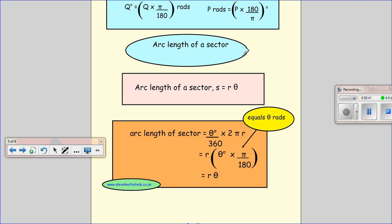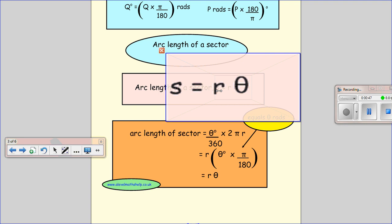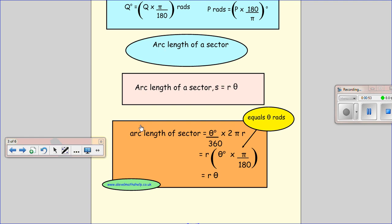For the arc length of a sector, the result we're trying to show is that the arc length, which is given by S, equals the radius of the circle times the angle of the sector in radians.